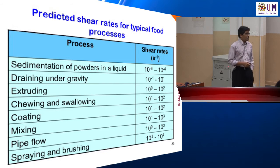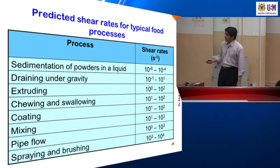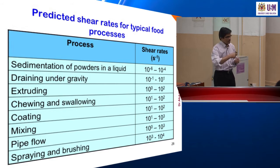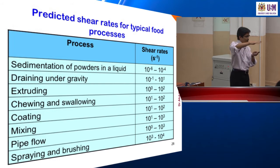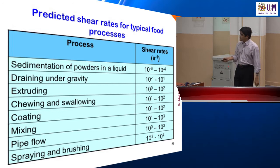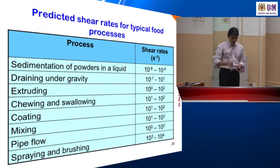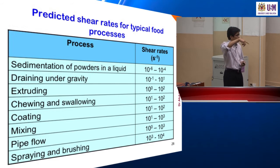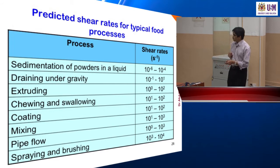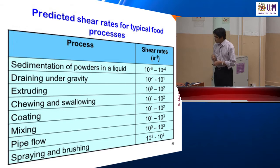Chewing and swallowing has a surprisingly quite high shear rate. Coating — when we pour liquid chocolate onto a cake — also has a relatively high shear rate. Mixing, depending on the type of mixer used, including high-speed mixing, has a shear rate. Pipe flow, and spraying and brushing are very high — up to 10⁴ s⁻¹.